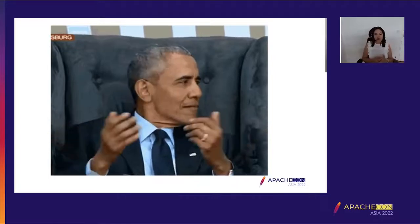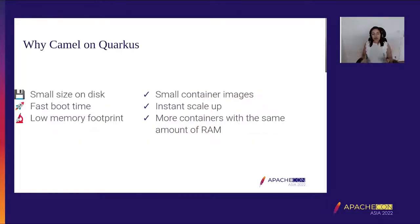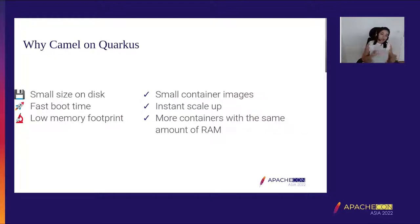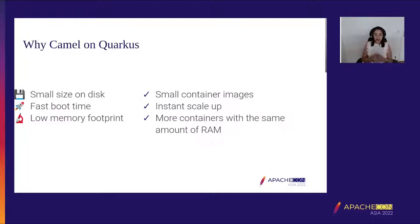If we want more optimization, we do native compilation with GraalVM, producing a native executable that is way more optimized than the JVM one. For our integrations deployed on Kubernetes, this means smaller container images, fast boot time for instant scale-up, and lower memory footprint — allowing more containers with the same amount of RAM and less money.